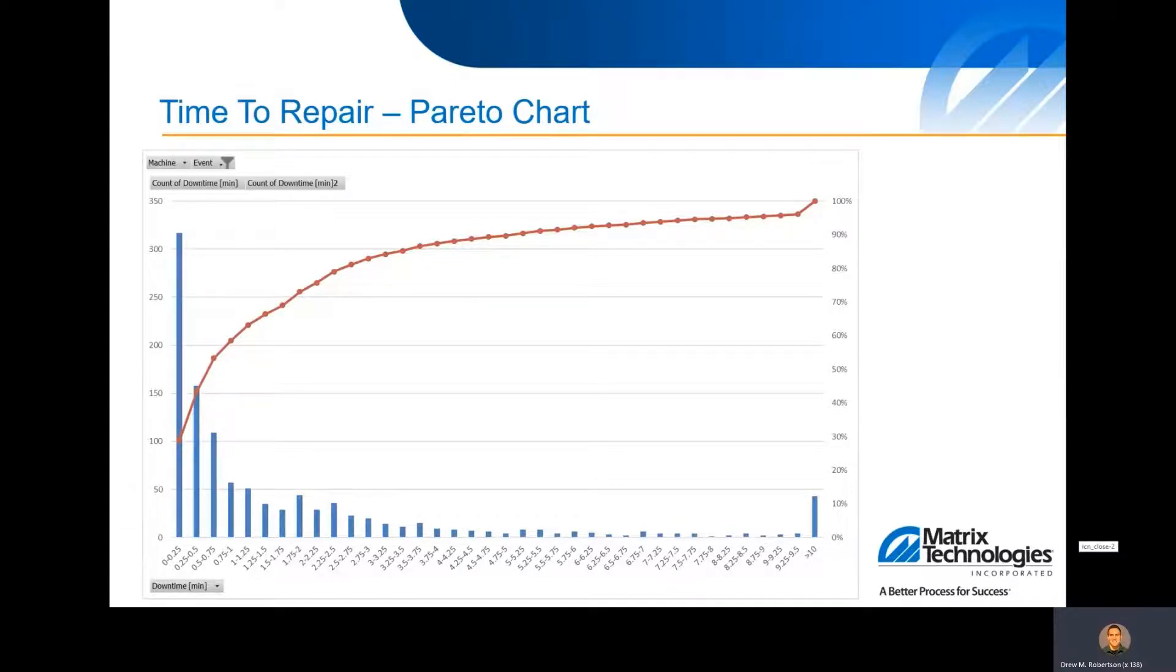Also from that TRACSIS data, we get this nice Pareto chart. And this doesn't directly go into the simulation, but it helps with the knowledge of what we do with accumulation and how much accumulation we should have. From this chart, we can see that about 60% of all of the events are one minute or less in duration, and 75% are two minutes or less in duration.